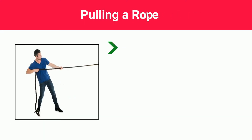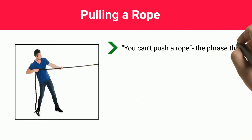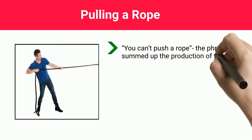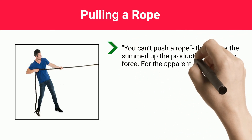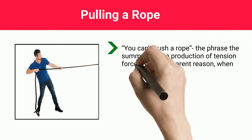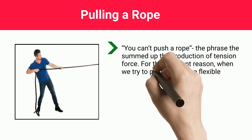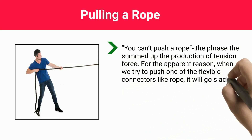Pulling a Rope. You can't push a rope — the phrase that summed up the production of tension force. For the apparent reason, when we try to push one of the flexible connectors like rope, it will go slack.